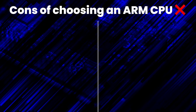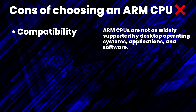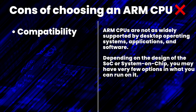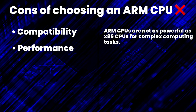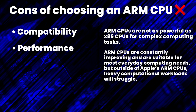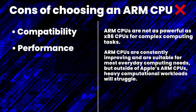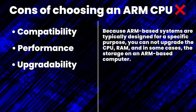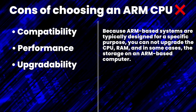And now onto the cons of ARM-based systems. First, compatibility: ARM CPUs are not as widely supported by desktop operating systems, applications, and software. Depending on the design of the SoC, or system-on-chip, you may have very few options in what you can run on it. Next is performance: ARM CPUs are not as powerful as x86 CPUs for complex computing tasks. They are constantly improving and suitable for most everyday computing needs, but outside of Apple's ARM CPUs, heavy computational workloads will struggle. And lastly, upgradability: because ARM-based systems are typically designed for a specific purpose, you cannot upgrade the CPU, RAM, and in some cases the storage.